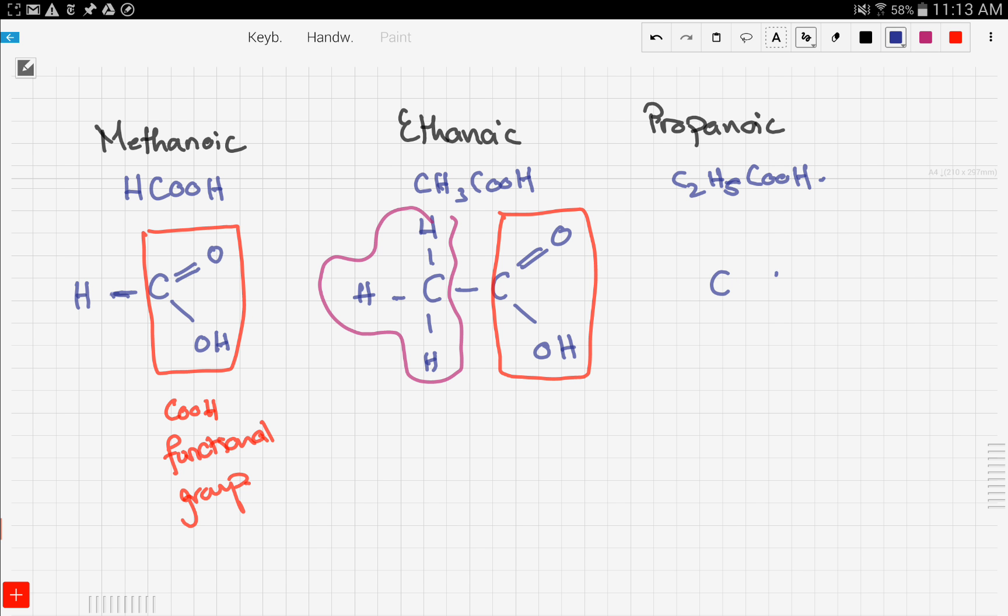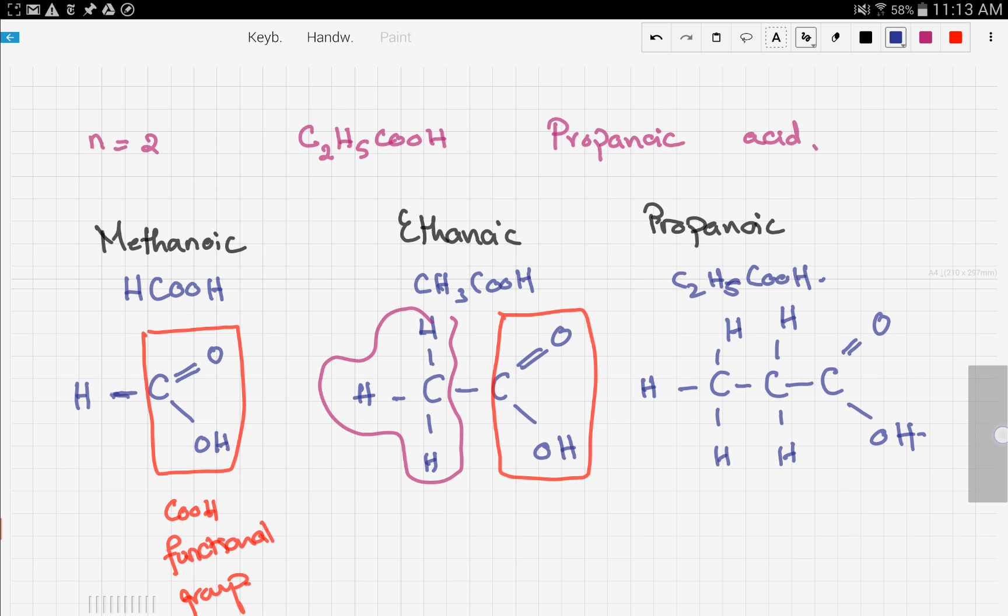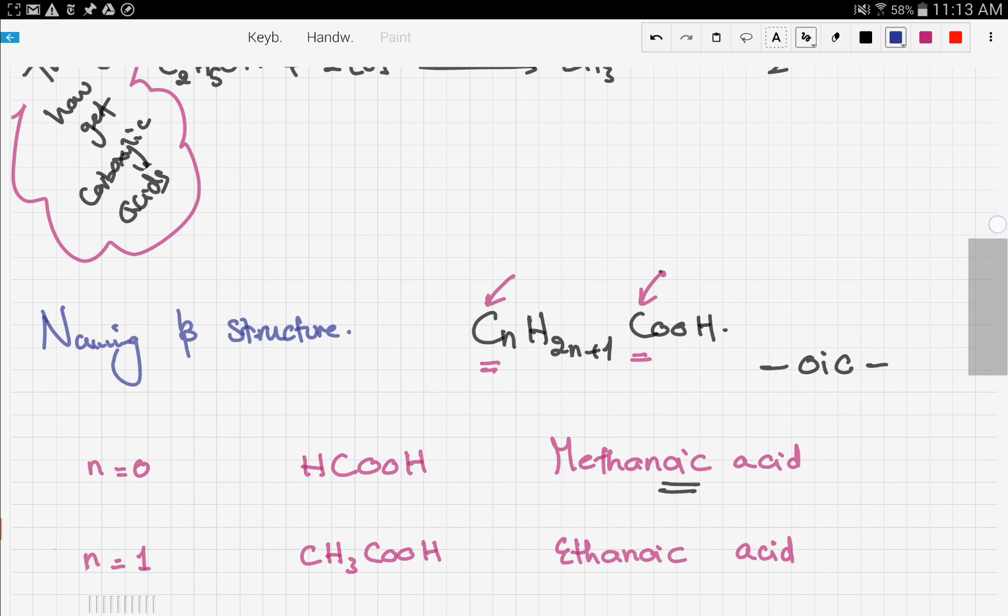You have your backbone, three Cs, singly bonded. Then you put your Hs, so we have five Hs, and then your double bond and your OH bond. That's it for naming and the structure of carboxylic acids.